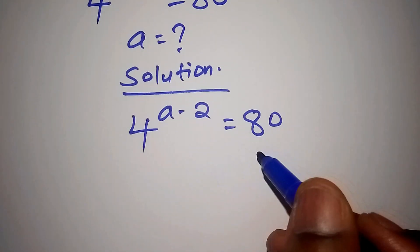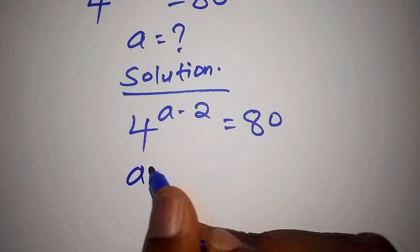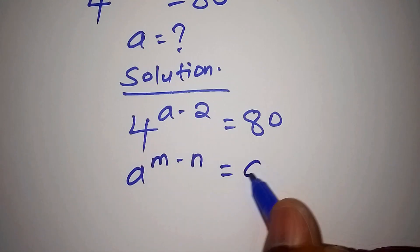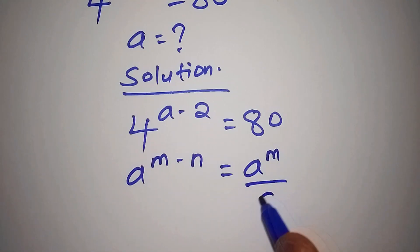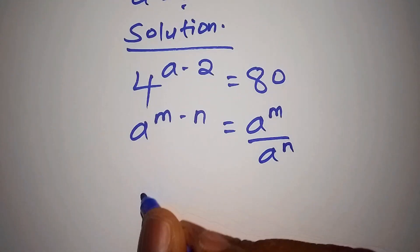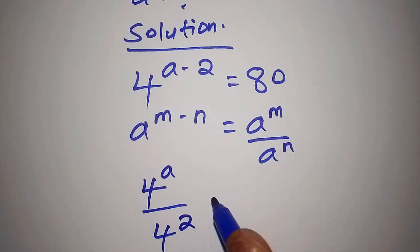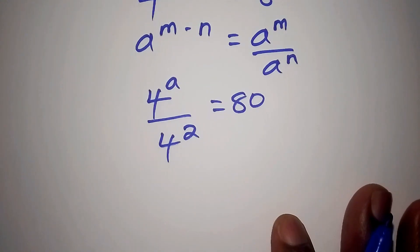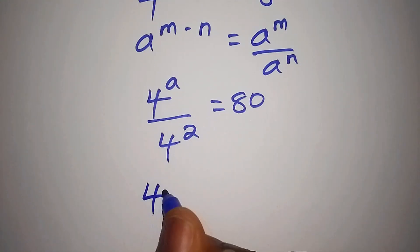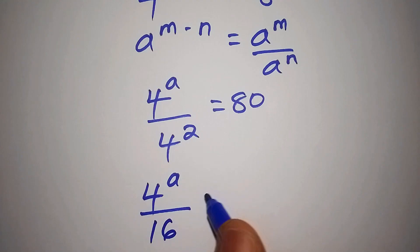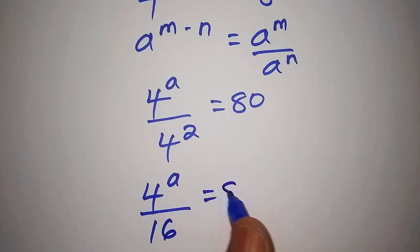Assuming that you have a to the power of m minus n, this can be written as a to the power of m all over a to the power of n. That means we shall now have 4 to the power of a, all over 4 to the power of 2, equals 80.